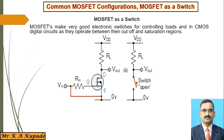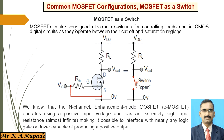As we know, the n-channel enhanced MOSFET operates using a positive input gate voltage. Whenever you apply a positive voltage to the gate, the MOSFET turns on and current flows from drain to source. It operates using a positive input voltage and has an extremely high input resistance, making it possible to interface with nearly any logic gate or driver capable of producing a positive output.